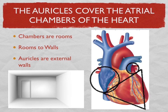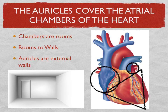Now, in most pictures in your textbook, when they point to this area right here, they're pointing to what would be the inside of the heart, which is where the atrium is. They'll point here and say there's an atrium, or point here and say this is a ventricle. The muscle walls here that cover the atrium are referred to as the auricles of the heart.